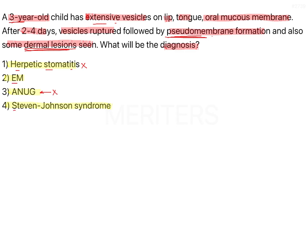Coming to erythema multiforme and Steven Johnson syndrome — both are interrelated. A more severe form of erythema multiforme is known as Steven Johnson syndrome. Both have ulcerative conditions: first there is vesicle formation, then ulceration and crusting. Steven Johnson syndrome leads to a lot of morbidity and is very difficult to manage, associated with bull's-eye or target lesion — also seen in erythema multiforme but more predominant and accentuated in Steven Johnson syndrome.